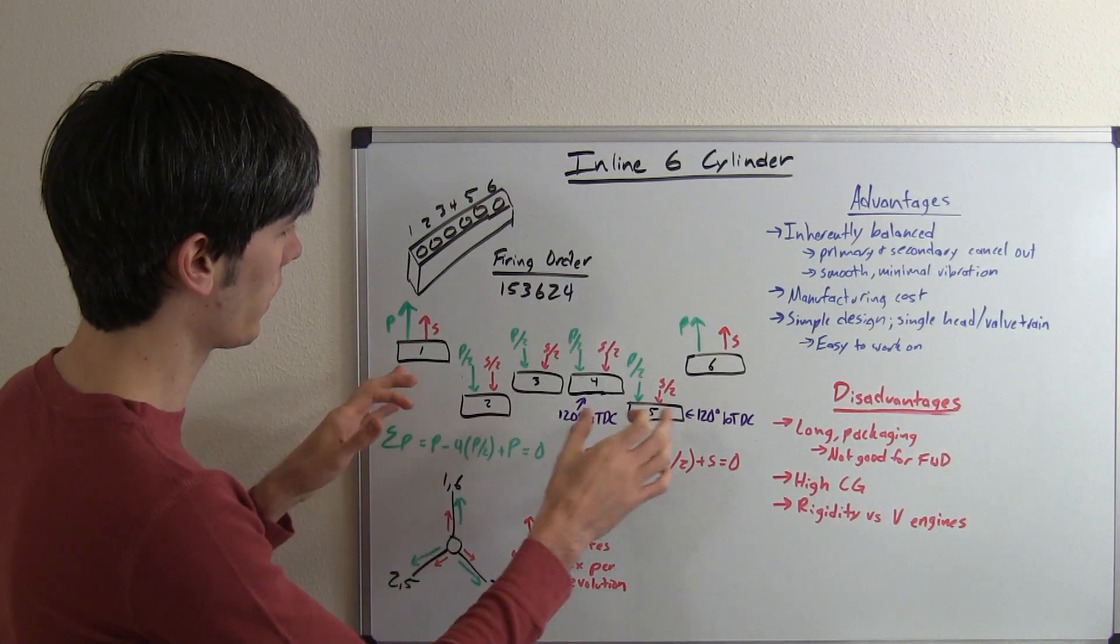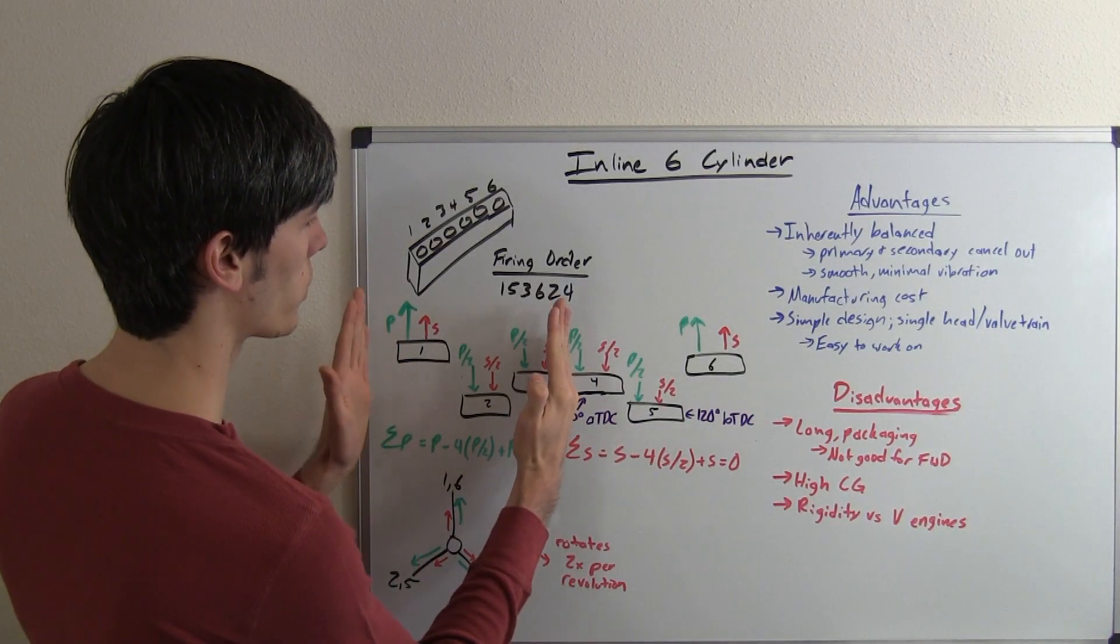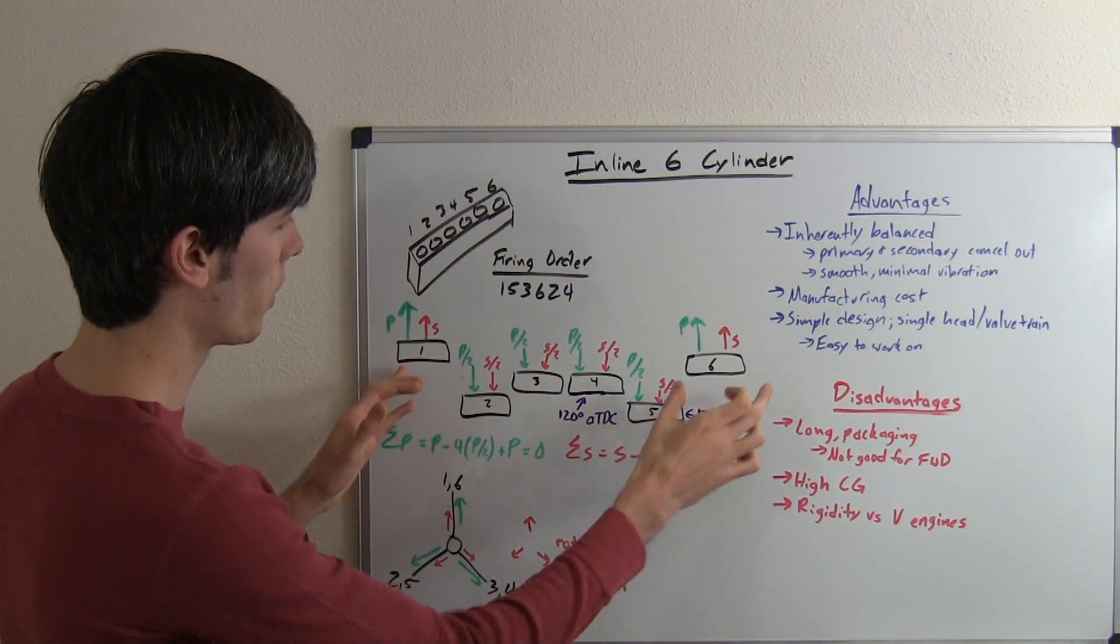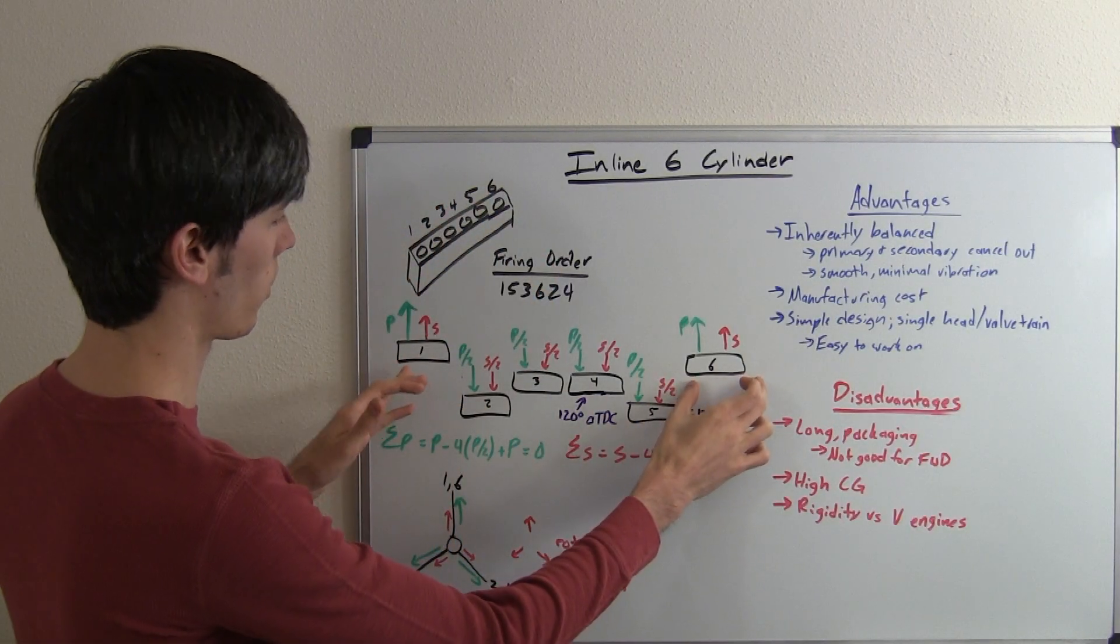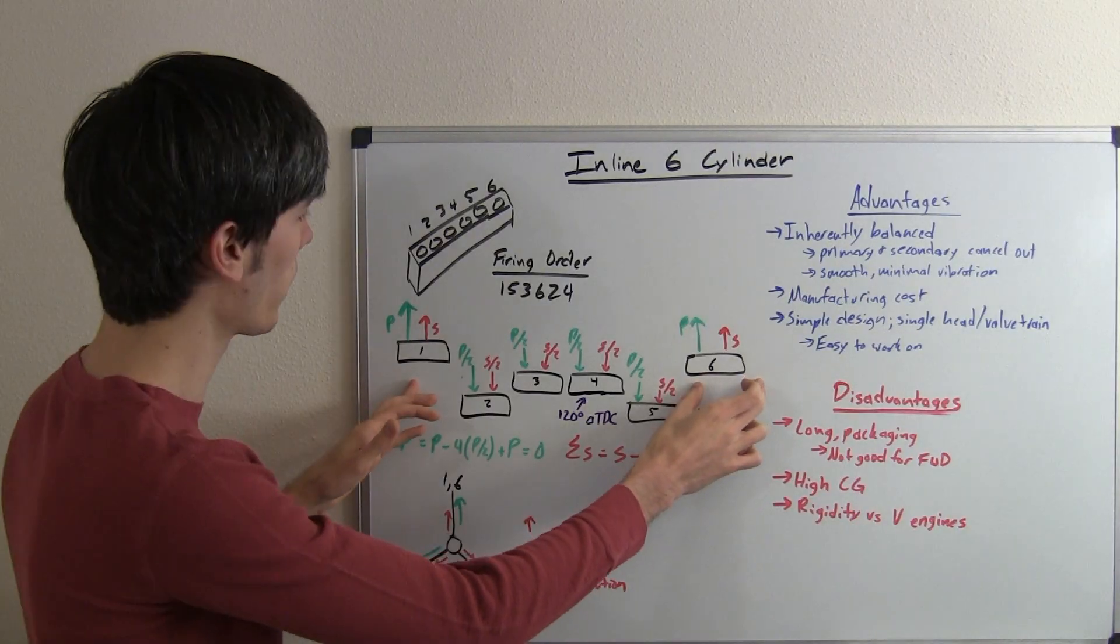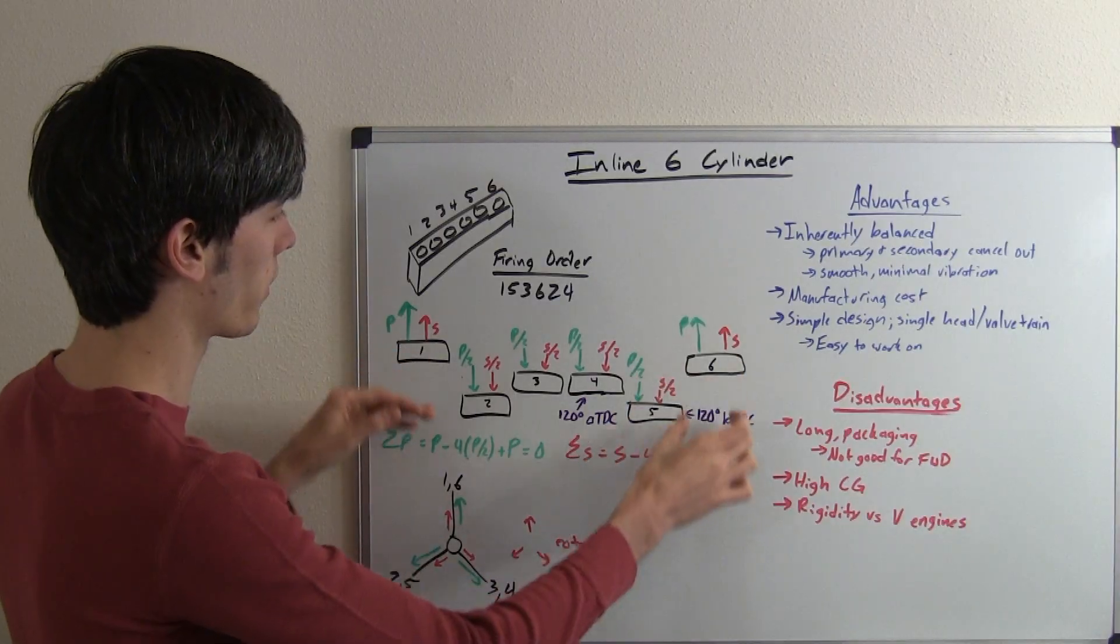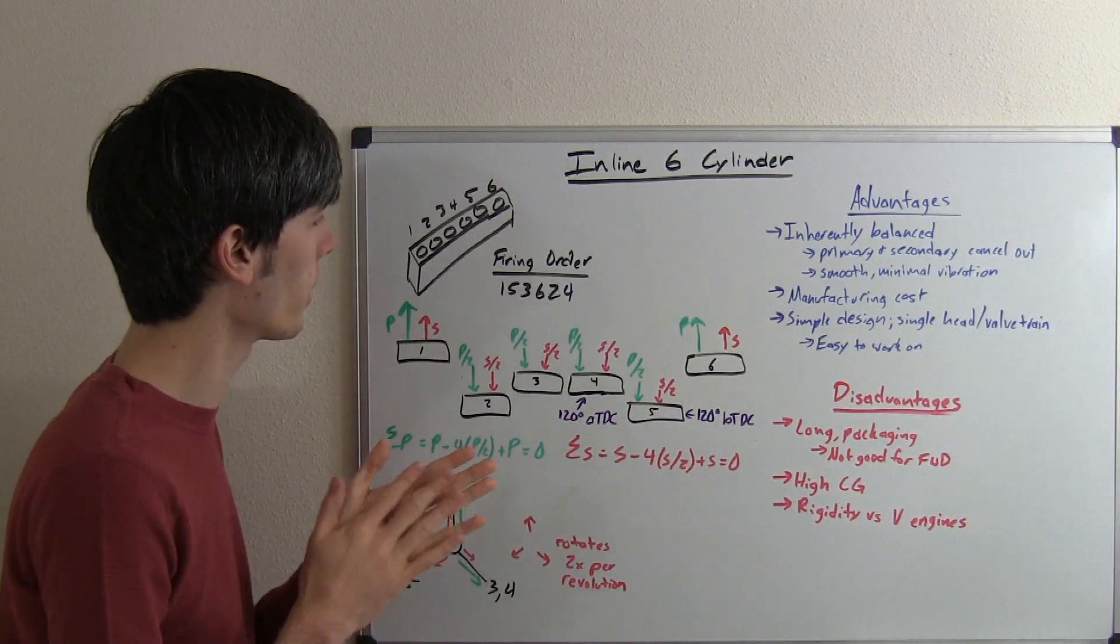What this is going to look like is basically you're going to have a mirror image of your first three cylinders as the last three cylinders. So the first and the last are going to move together, the second and the fifth are going to move together, and then the third and the fourth are going to move together as far as their up and down motion.